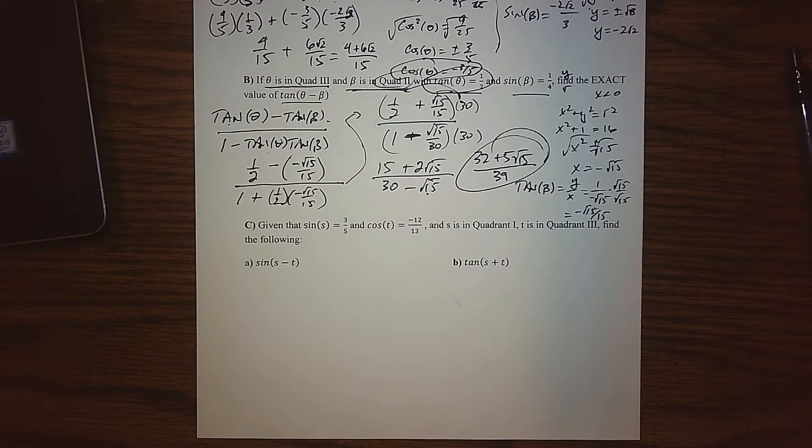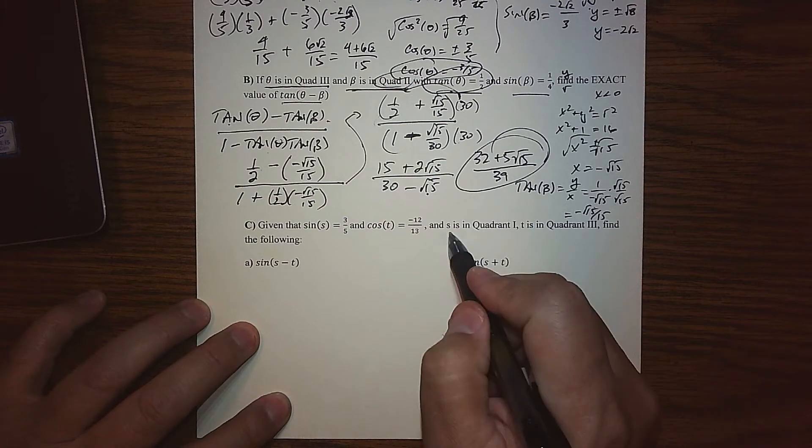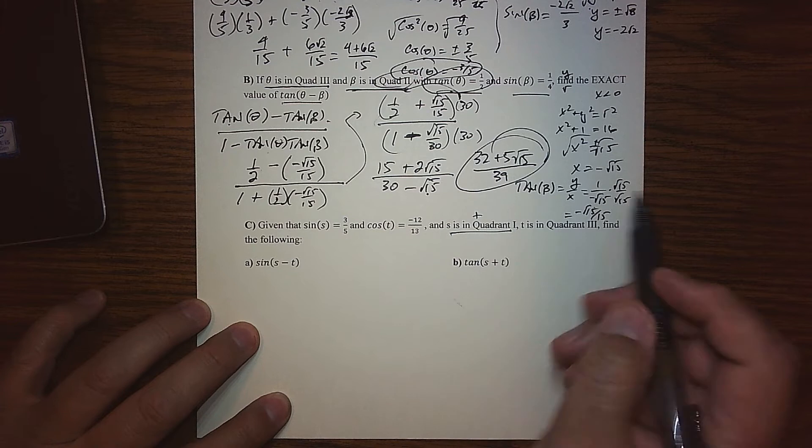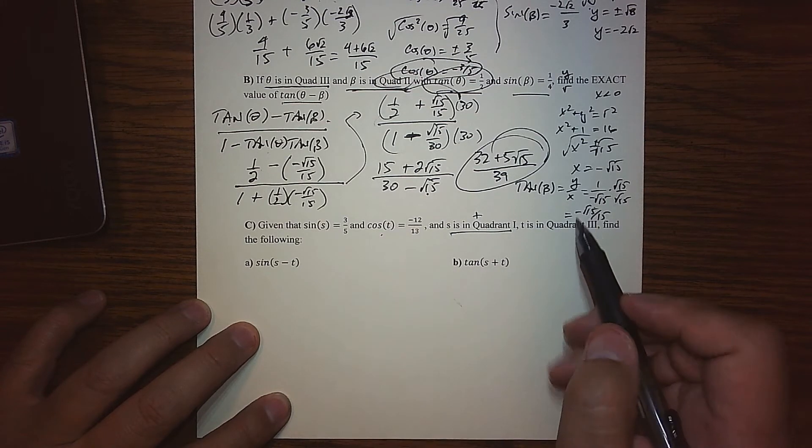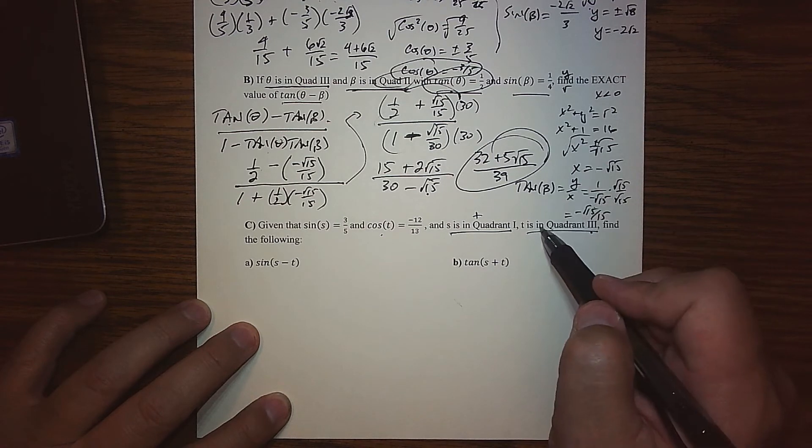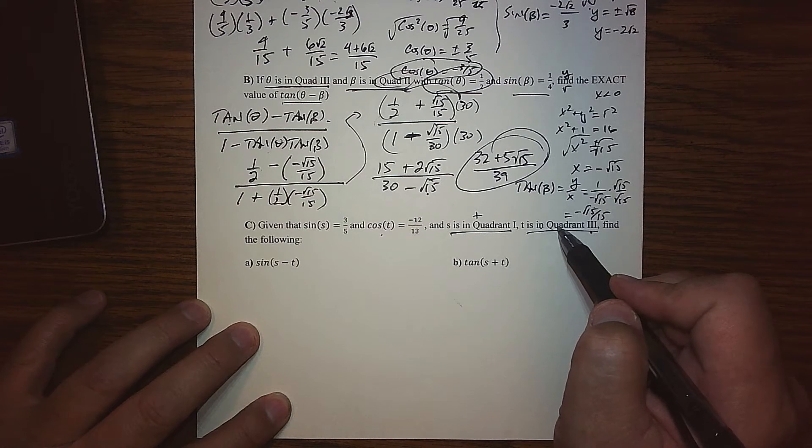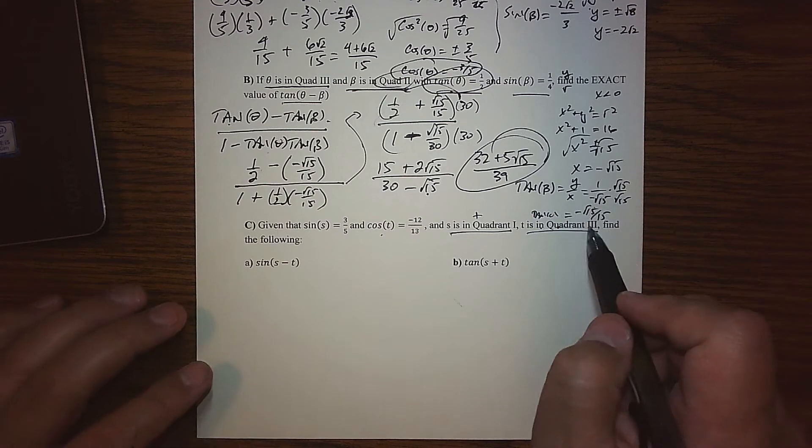So in this bottom half, we're going to step away from thetas and betas and call them s and t's, but the problem is still pretty much the same. So in this case, the sine of s is 3 fifths, and we're told that s is in quadrant 1, so that's nice, everybody's positive in that quadrant. And then cosine of t is negative 12 over 13, and we're told that we're in quadrant number 3. So that means sine and cosine are negative, and the tangent is nice and positive.